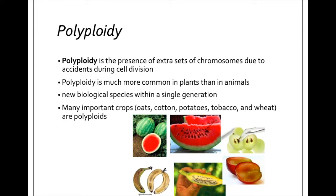One way this can happen is through polyploidy. Think back to genetics — you know haploid and you know diploid. Diploid means you have two sets of every chromosome. Haploid means you have one set of every chromosome. Poly means many, so a polyploid is going to have many sets of chromosomes, typically in excess of two. You could be triploid and have three, tetraploid and have four, hexaploid, octaploid, or dodecaploid and have twelve sets of chromosomes. This just happens because of accidents during meiosis.